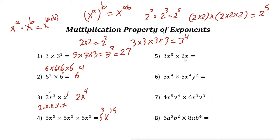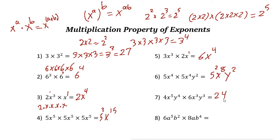Next: 3 times 2 is just 6. For x times x to the power of 3, x here is to the power of 1, so 3 plus 1 is 4. The answer is 6x to the power of 4. Next: 5 times 5 gives 25, or 5 squared. x to the power of 4 times x to the power of 4 is x to the power of 8 — just add the powers. And y to the power of 2 stays as y to the power of 2. Next: 4 times 6 is 24. When you don't have the same base, just multiply them. x to the power of 5 times x to the power of 3 is x to the power of 8. y to the power of 4 times y to the power of 3 is y to the power of 7.